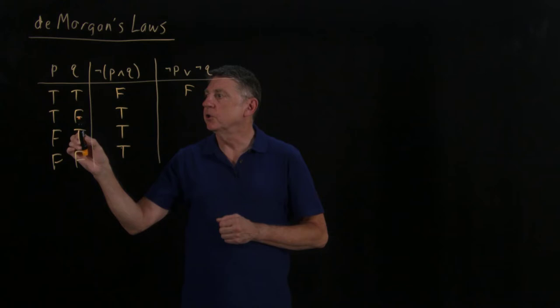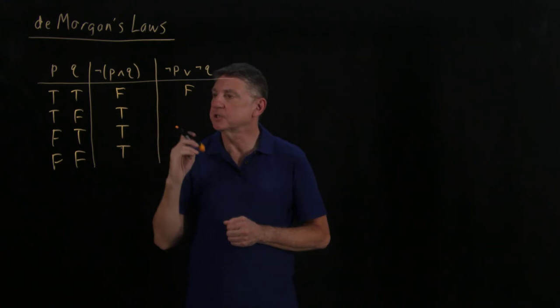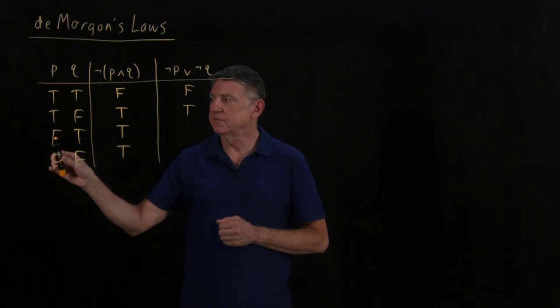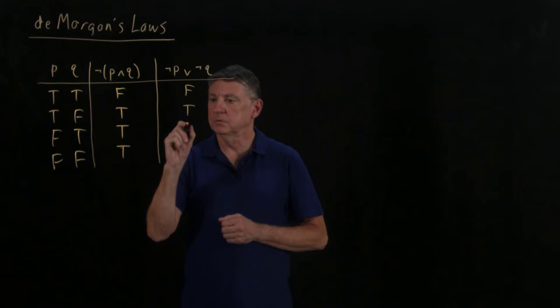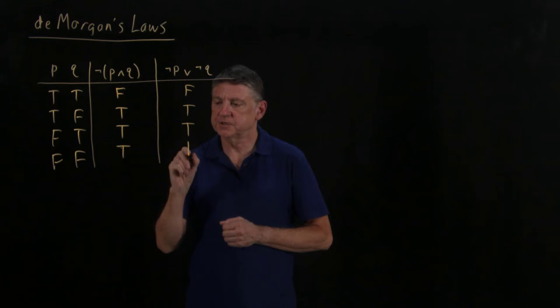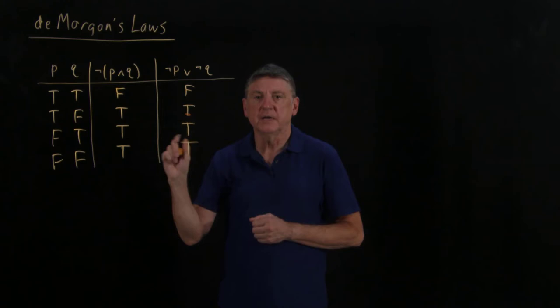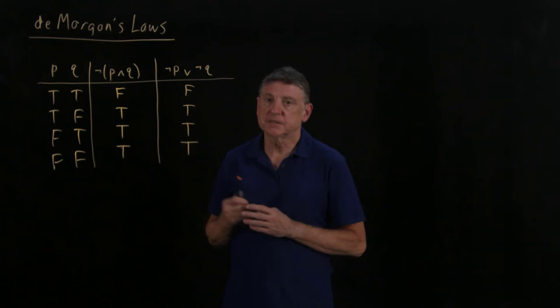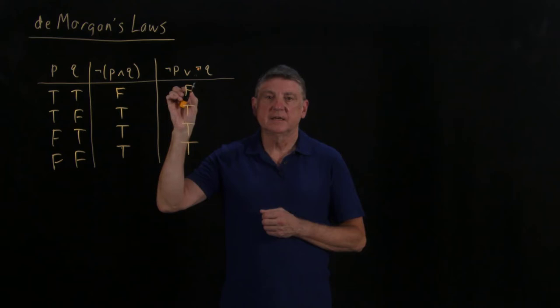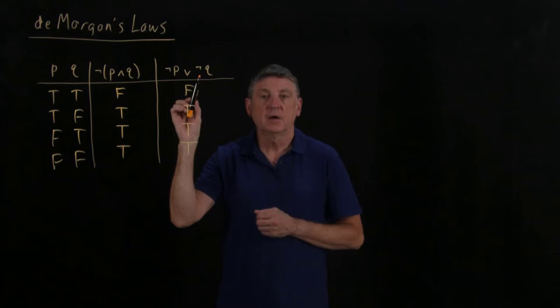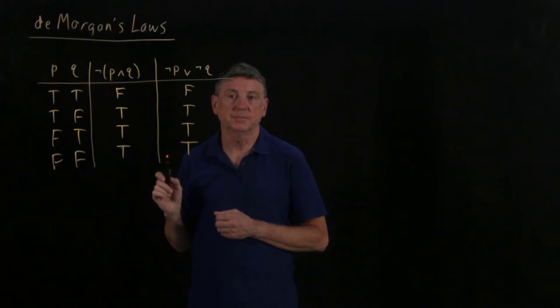We can use some quick reasoning here. In the next row, q is false, so the negation of q is true, so the disjunction is true. Then p is false, so the negation of p is true, so the disjunction is true. And in the last row, both are false, so the disjunction of their negations is true. What we have is a semantic equivalence: we could take ¬(p∧q) as a premise and deduce ¬p∨¬q as a conclusion using natural deduction, or vice versa.